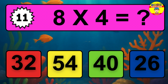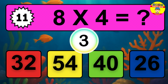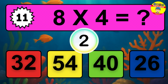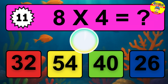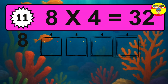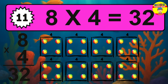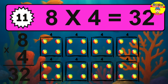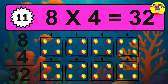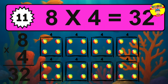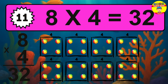Question 11. 8 times 4 equals what? The answer is 8 times 4 is 32. To calculate, we have 8 groups with 4 balls each one. So, how many balls do we have? 32 balls.